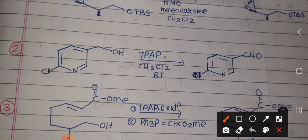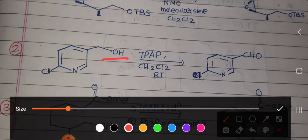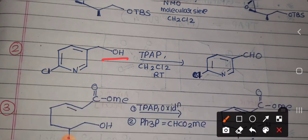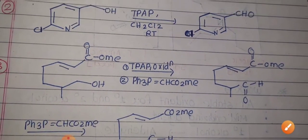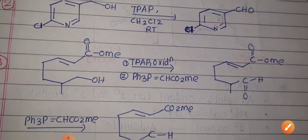Moving to the next example: again a primary alcoholic group is given along with the TPAP reagent, and it will get converted to the aldehyde.